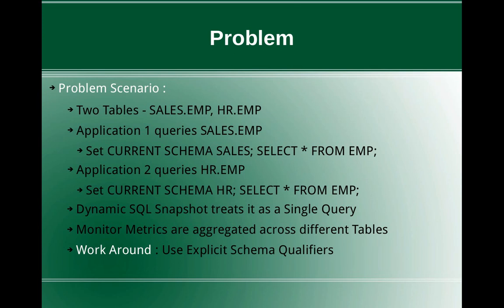This slide talks about the problem scenario. We have two tables: sales.emp and hr.emp. Sales department employees are in the sales.emp table, and HR department employee data is maintained in the hr.emp table. Those two are physically two different tables. The number of records, run stats details, distribution statistics, volume of data, type of data, and their read/write access patterns and usage can all be different.